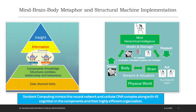Sentient computing mimics this neural network and cellular DNA complex along with 4E cognition in the components and their highly efficient organization. The new math of structural machines, cognizing oracle agents, and knowledge structures enables us to address many valid concerns raised in the book Life After Google by George Gilder. Structural machine implementation — using managed knowledge structures, microservices orchestrated by cognizing oracle agents — comes as close as possible to mimicking the sentience, intelligence, and resilience of living cellular organisms.